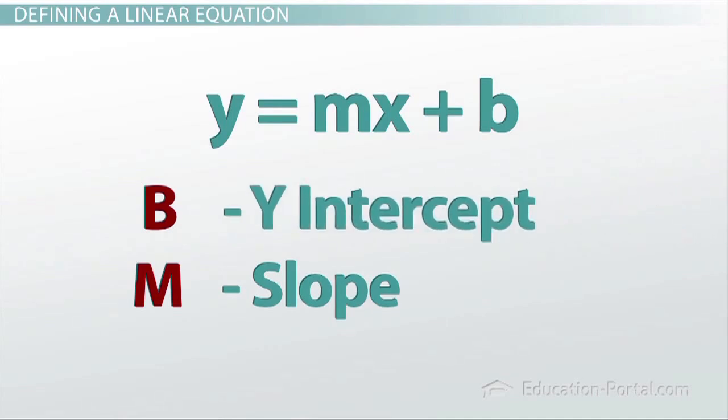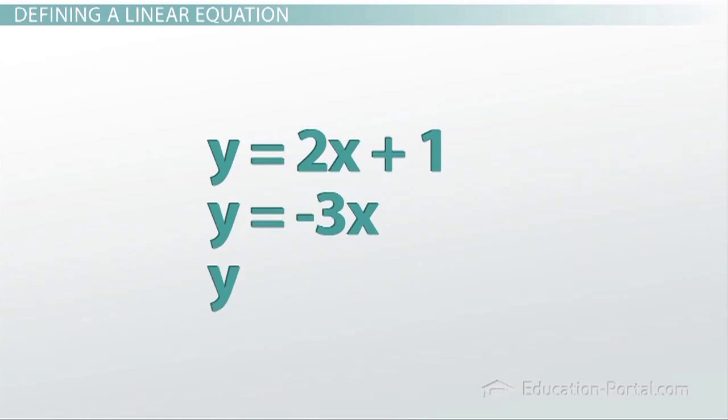Some examples of a slope-intercept form equation are: we could have something like y equals 2x plus 1, we could have y equals negative 3x, or we could have y equals two-thirds x minus 6.